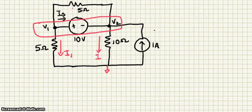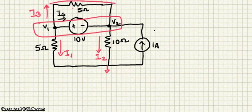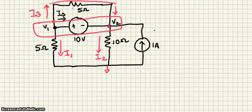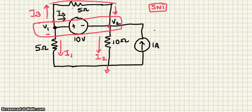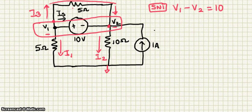So let's write down all the currents coming in and out of the supernode. Call this I3. Now I3 goes around and also comes back — it's coming out of that node and also going back into the node. For supernode 1, we can write the voltage equation: V1 minus V2 is equal to 10. That is our first expression.